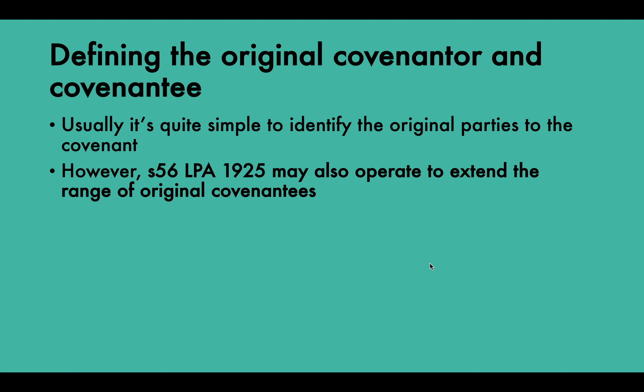How can we define the original covenantor and covenantee? Usually it is quite simple to identify the original parties to the covenant — those persons named in the covenant and having signed it in the presence of a witness. However, section 56 of the Law of Property Act 1925 may also operate to extend the range of original covenantees, those who enjoy the benefit, although not the covenantor's, those who bear the burden, beyond those who are actually parties to the deed. This section may extend the number of people benefiting from the original covenant, but it won't extend those who are burdened by it.